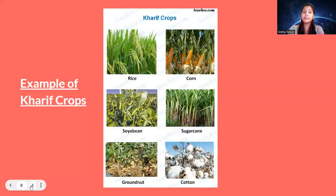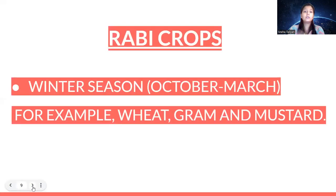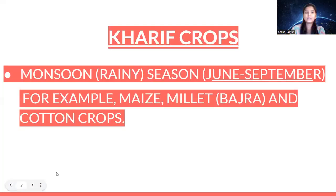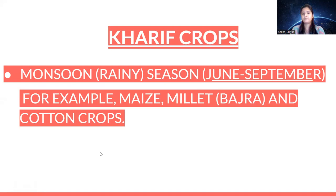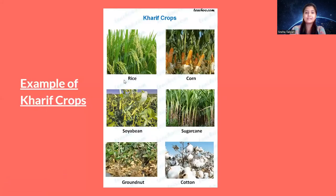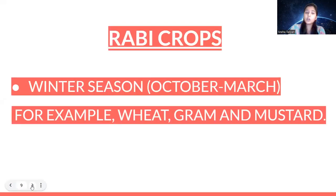There are different types of crops. Kharif crops are known as the monsoon or rainy season crops, grown from June to September. Examples include maize, millet (bajra), and cotton. Other examples of kharif crops are rice, corn, sugarcane, soybean, groundnut, and cotton.